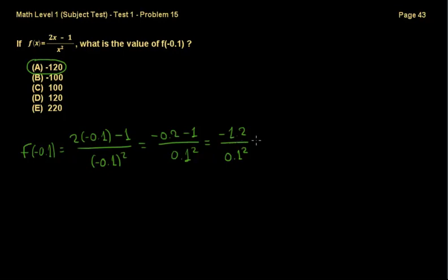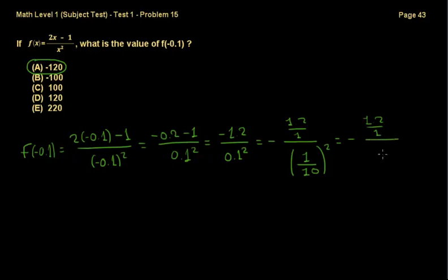Now let's see how we'd calculate this manually. We have −1.2 over 1, over 1 over 10 squared, because 0.1 is 1 over 10. So that's the same as −1.2 multiplied by 10 squared over 1, which is 10 squared times 1.2 equals 120, and 1 times 1 is 1 — so that's 120 over 1, which is 120. Therefore the answer is −120, confirming the correct answer is A.